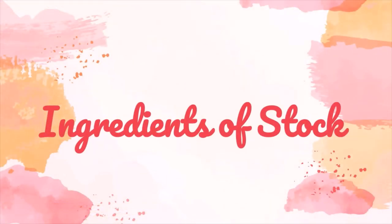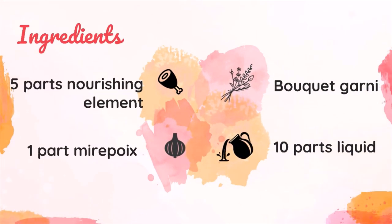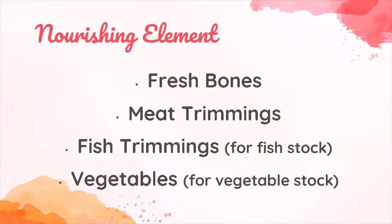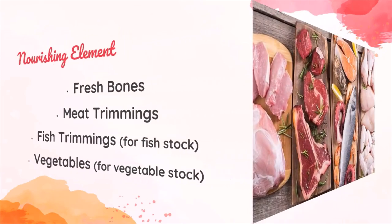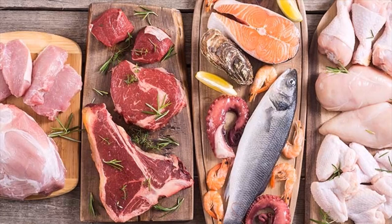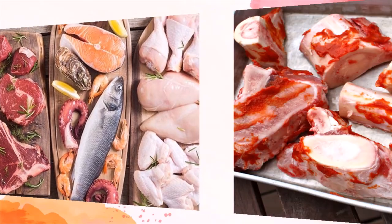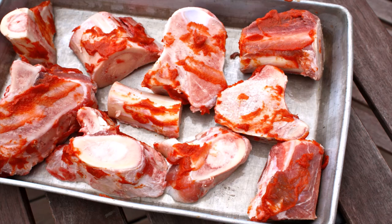A stock is composed of four ingredients. These ingredients are usually mixed in the following proportions: five parts of nourishing element, one part of mirepoix, bouquet garni, and ten parts of liquid. The nourishing element includes fresh bones, meat trimmings, fish trimmings, and vegetables. Nourishing element is the most important ingredient in a stock. It provides flavor, nutrients, and color. Some nourishing elements may bring other benefits to the stock, such as bones, which add gelatin.